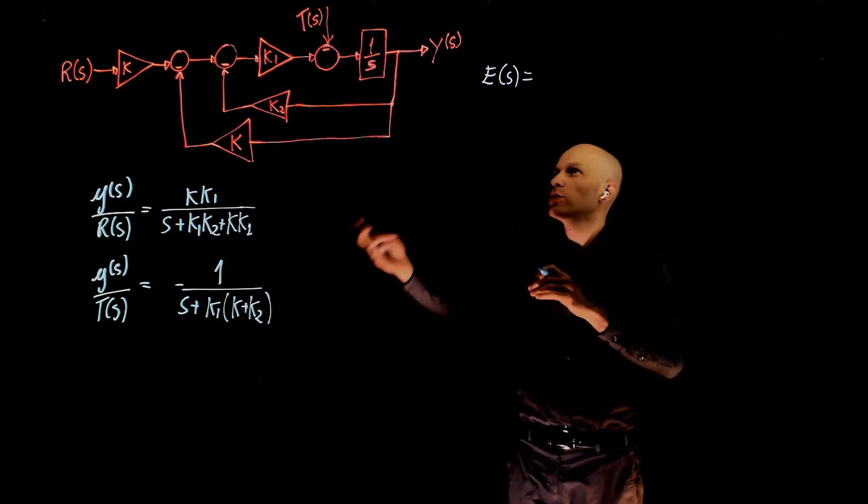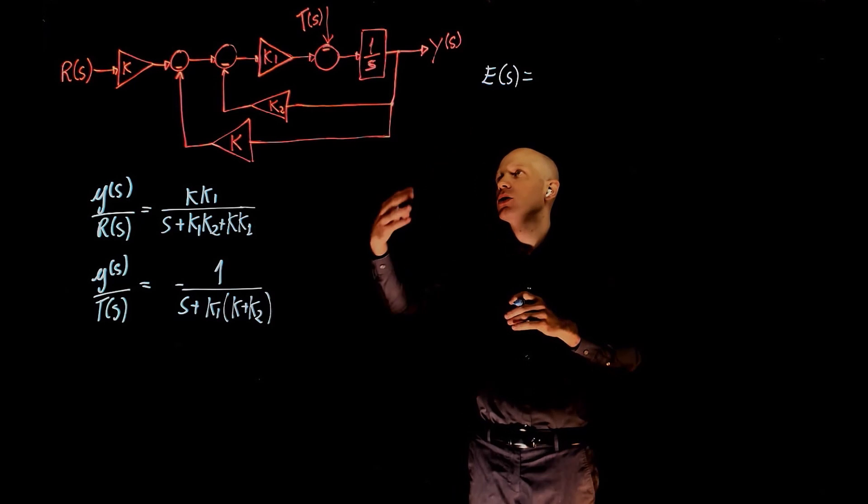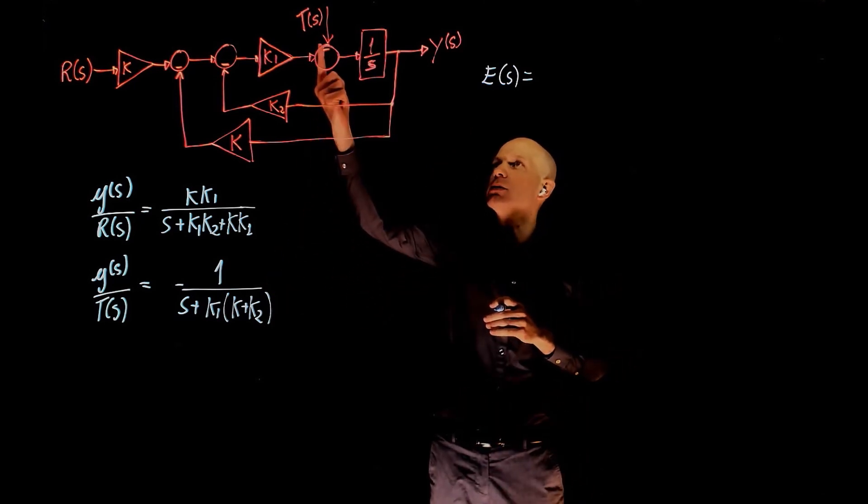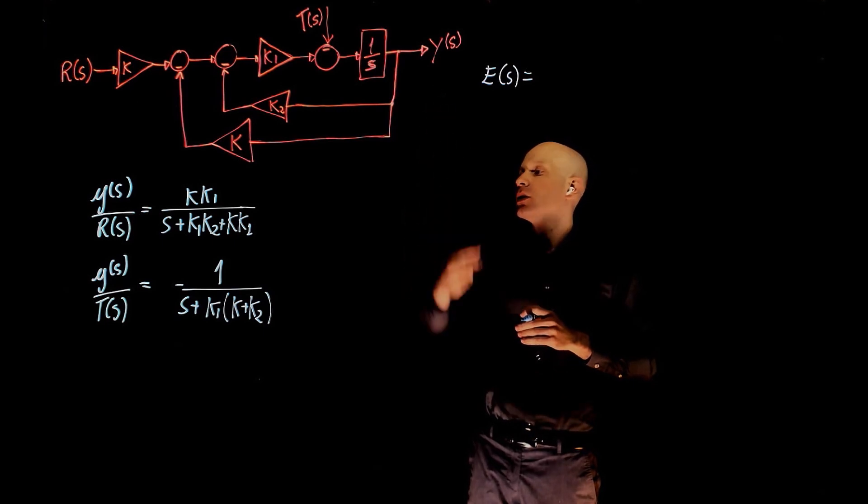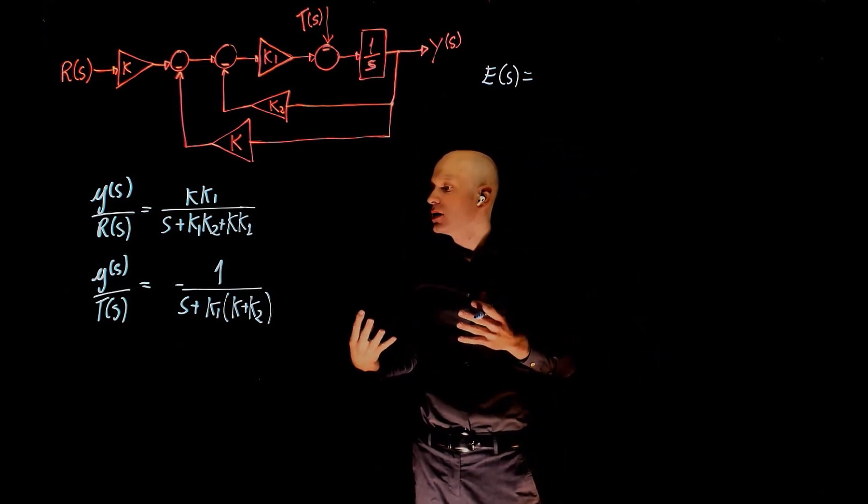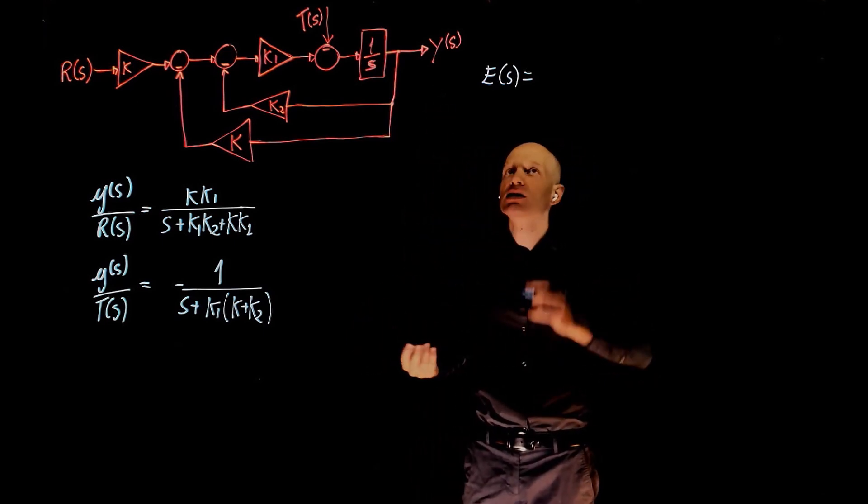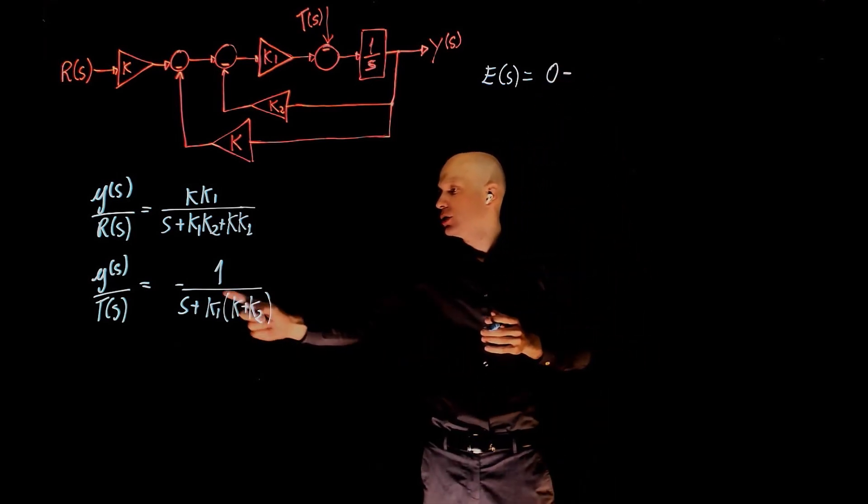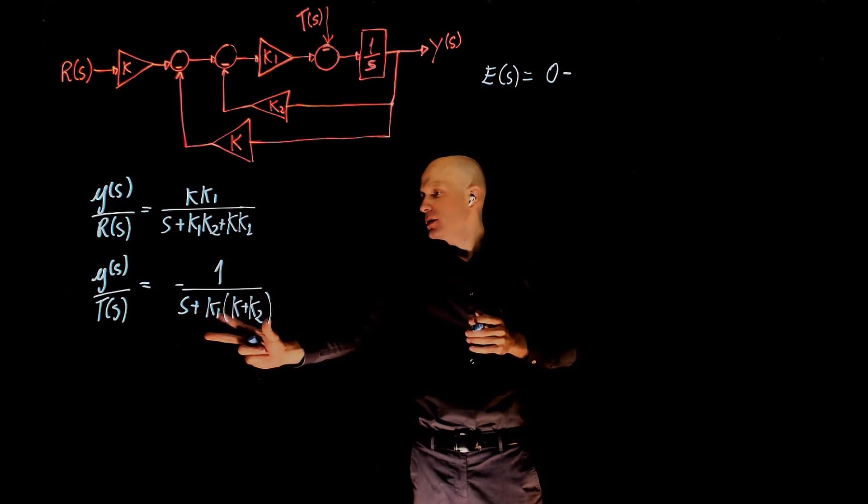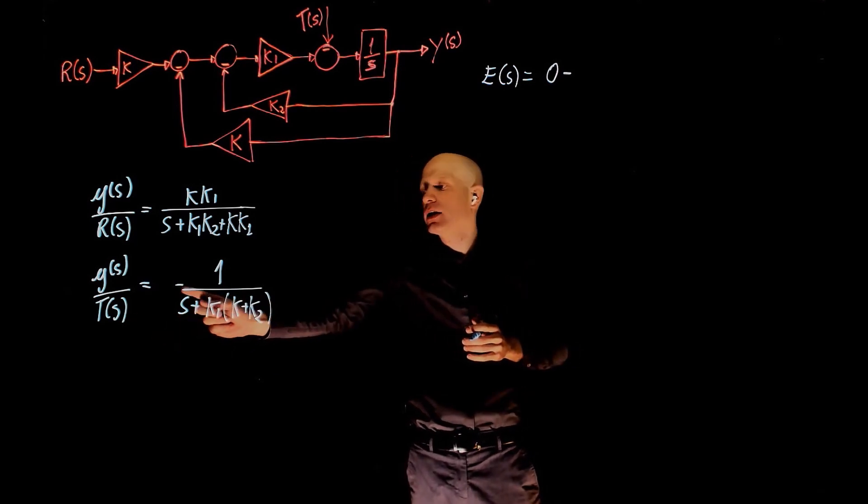The system is trying to control y of s such that it goes to 0, but there is a disturbance and the disturbance will make y deviate from 0. So now our steady state error or our error function is simply 0 minus the actual position.